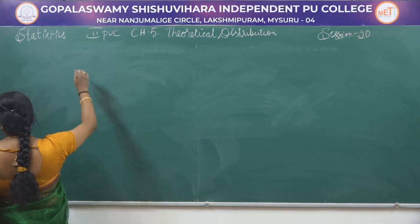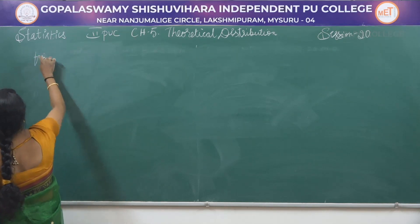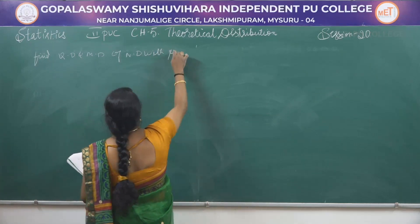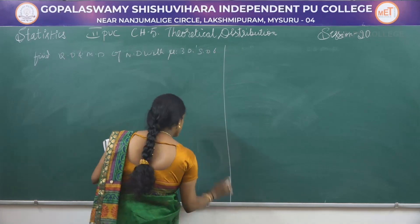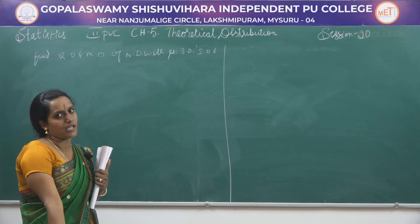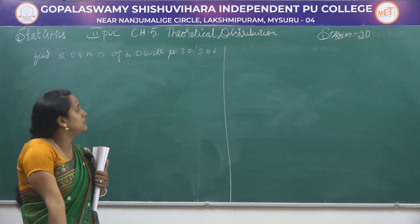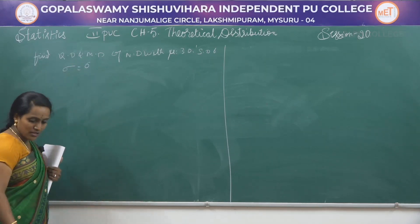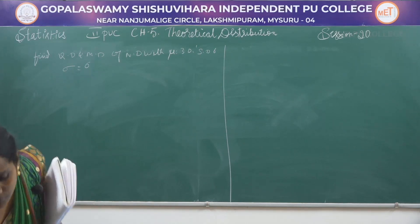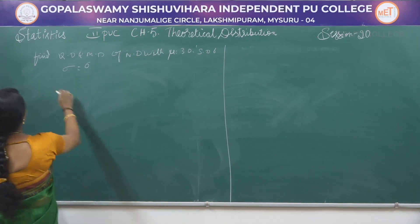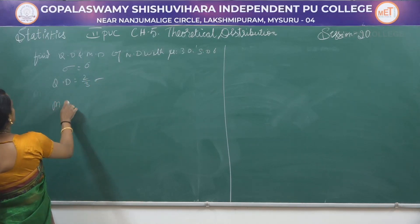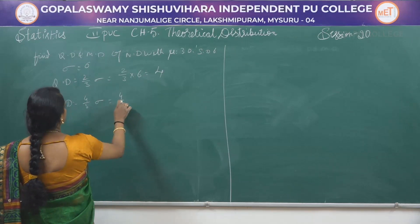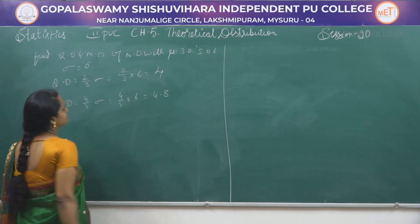Find QD and MD of a normal distribution with mean μ = 30 and standard deviation σ = 6. Here, the mean value is given only to confuse us — there is no use of the mean value to calculate quartile deviation and mean deviation. So σ = 6. QD = (2/3) × 6 = 4, and MD = (4/5) × 6 = 4.8.